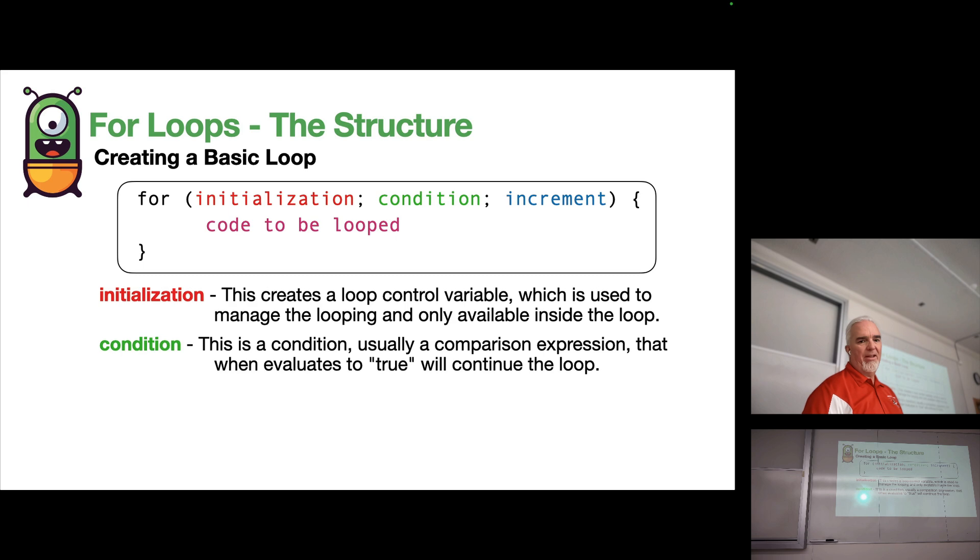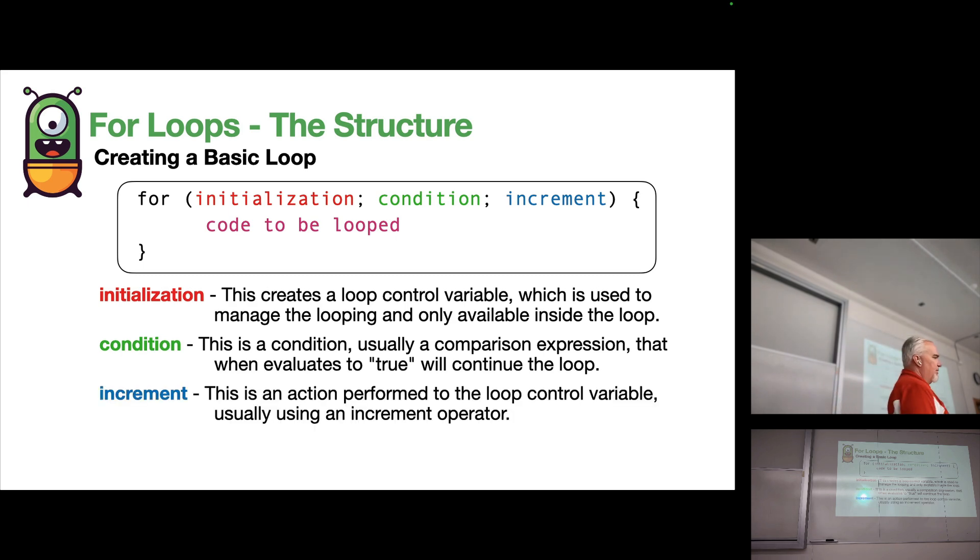Finally, the increment is an action performed to the loop control variable. In the initialization, you're starting with a value. In the condition, you're checking to see if that value is still within a range.